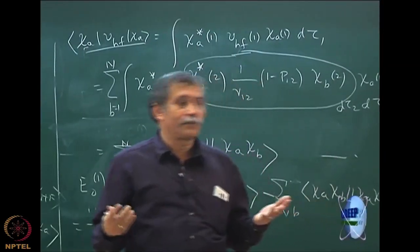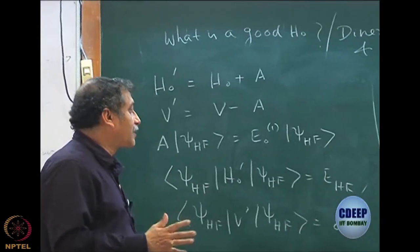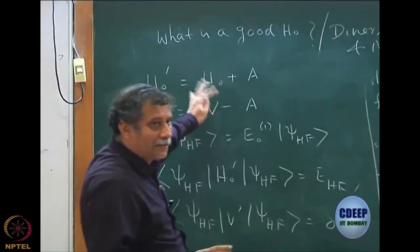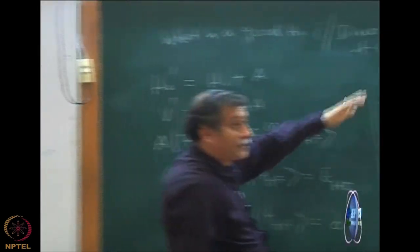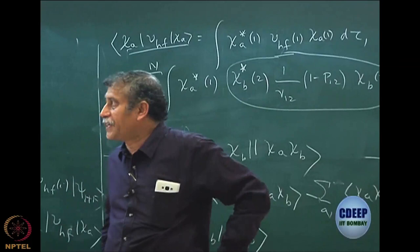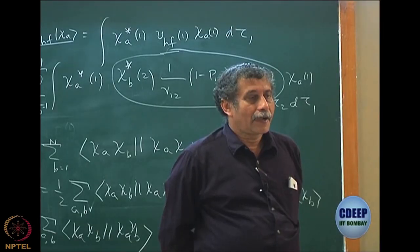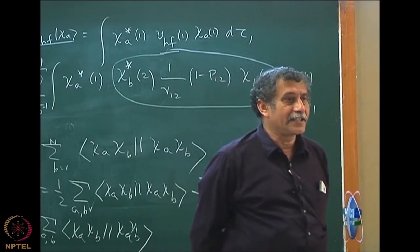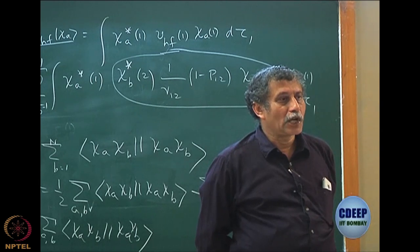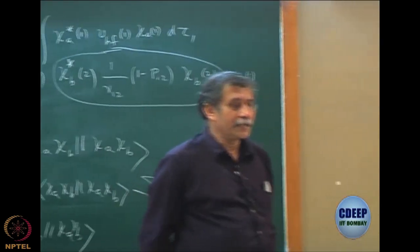That is a very important fact that you have to accept. Only at second order will you first start to get correlation energy. You can play around with several things, but it is not easy to recover correlation energy at first order. Our perturbation theory is only for the ground state — it works for ground state. Excited state perturbation is more complicated simply because of the multi-reference problem, meaning degeneracy.